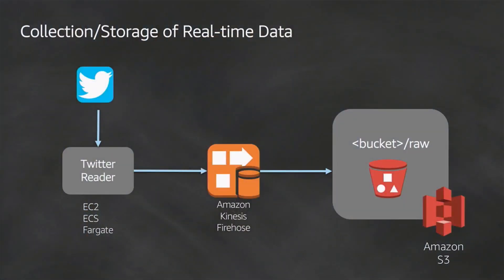Let's zoom in on the Twitter reader. That Twitter reader can run on EC2, ECS, or Fargate. Fargate is basically — you have a Docker container, you don't want to worry about underlying infrastructure, you just say 'Fargate, run my container for me.' You specify CPUs and RAM, and beyond that it figures everything out and runs it for you.